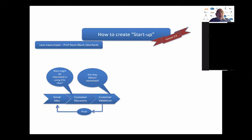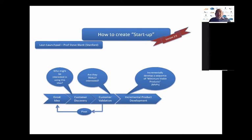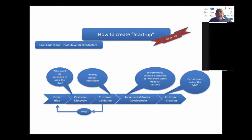Invariably, you might find that the customer doesn't want exactly what you imagined, and you then pivot — you change your idea. You think afresh about who might want it and then revalidate. After that, you create what they call a minimum viable product — an MVP. You incrementally develop a sequence of these MVPs. You would take that minimum viable product and get someone to buy it, someone who really wanted it, and that would reinforce that there was a market for it.